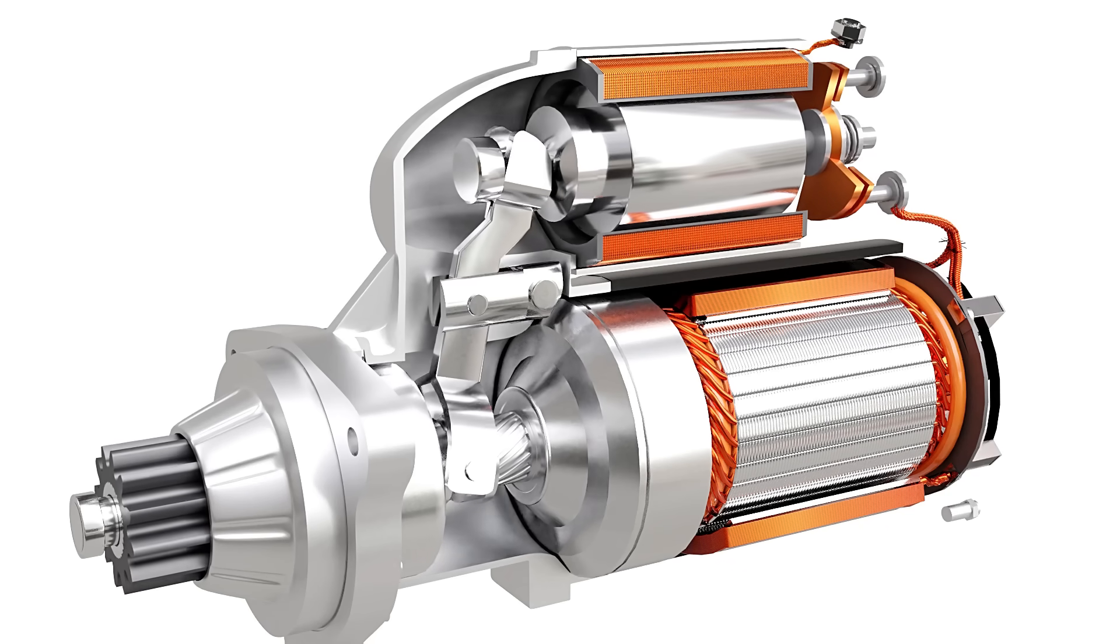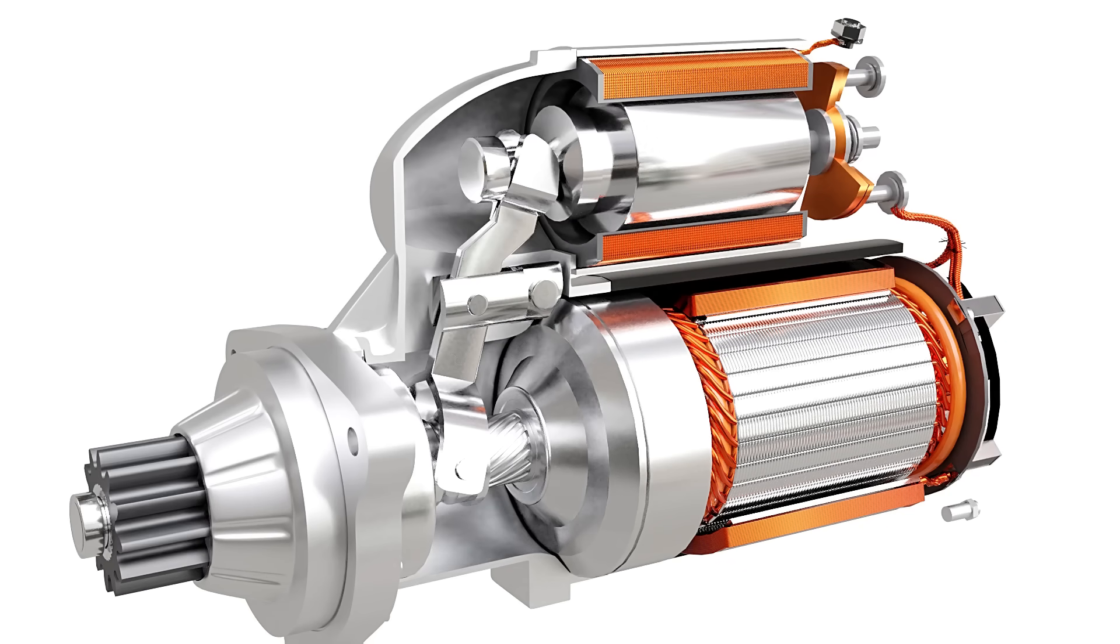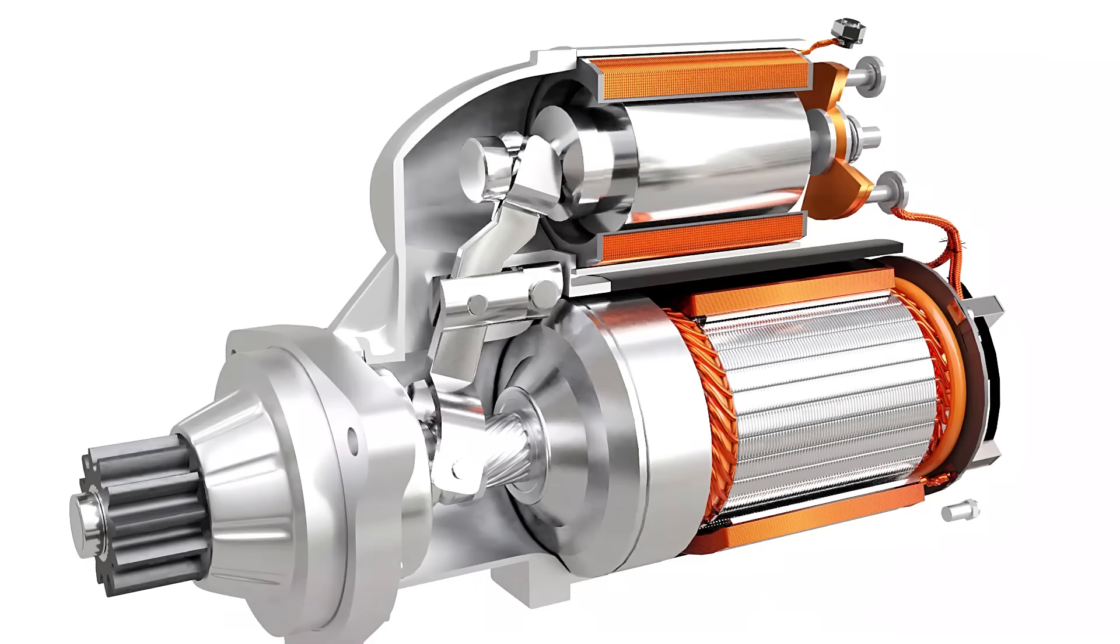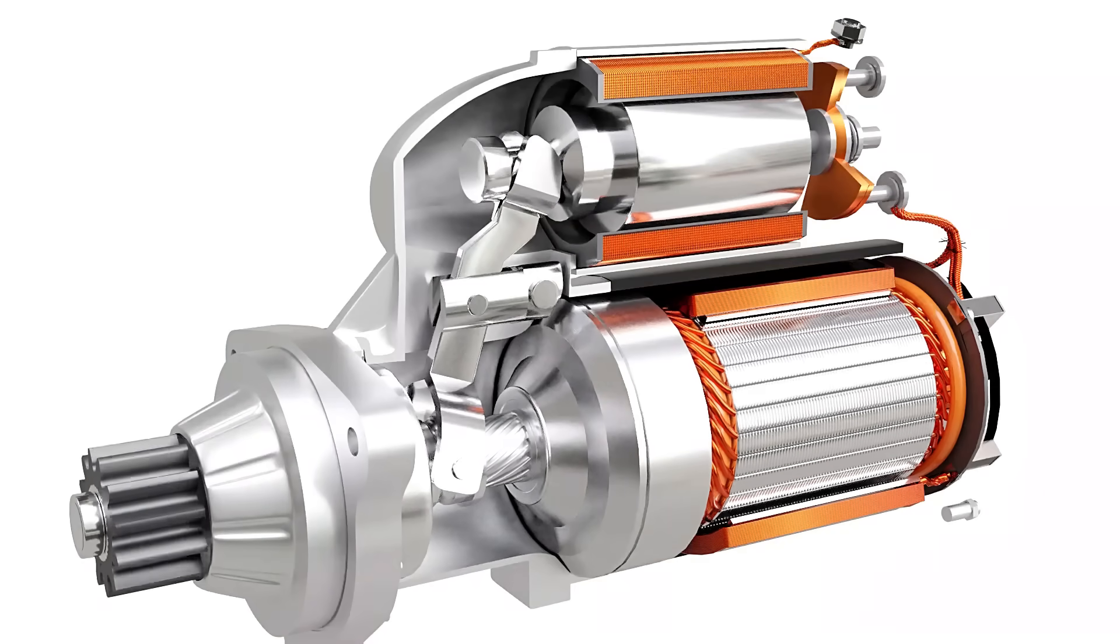This rotation is achieved by using a helical spline. This rotation helps meshing the pinion with the flywheel more conveniently. As the pinion and flywheel are properly meshed, the contactor switch gets closed and the motor spins.